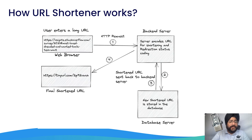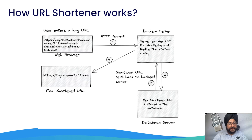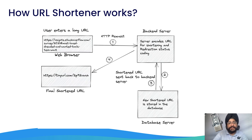In this slide, we are going to talk about how URL shorteners actually work. Whenever a user clicks a link — say a TinyURL link — an HTTP request is sent to the backend server with the full URL. The backend server reads the path part that maps to the database, where we store the description, name, and the real URL. It then issues a redirect, which is an HTTP 302 response with the target URL. If the URL is not found, you get a 404 error.